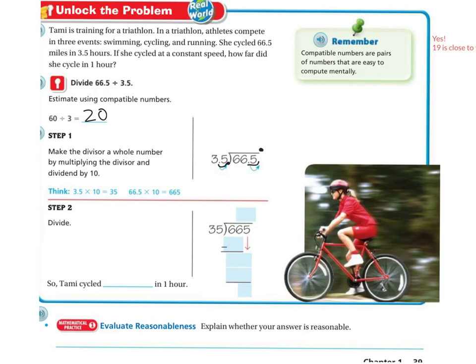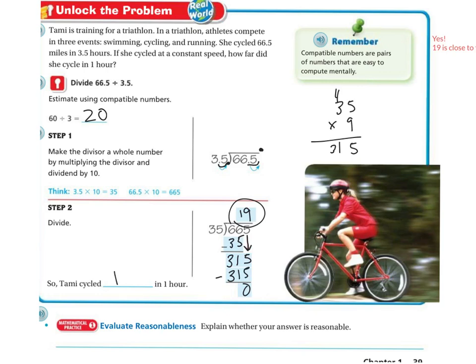So I'm going to divide. 35 can't go into 6, but it can go into 66 — it goes in one time. 1 times 35 is 35. I subtract: 6 minus 5 is 1, 6 minus 3 is 3. Then I bring down my 5. Now I have 35 going into 315, which is about 9 times. 35 times 9: 9 times 5 is 45, carry the 4; 9 times 3 is 27, plus 4 is 31. So I put a 9 there — it's 315. I subtract and get 0. So Tammy cycled 19 miles in one hour.